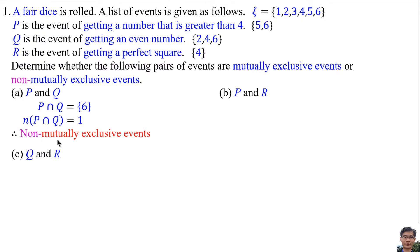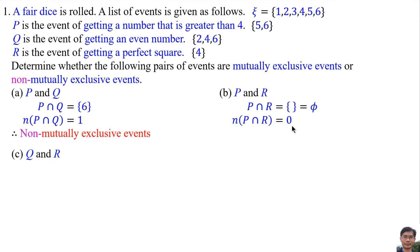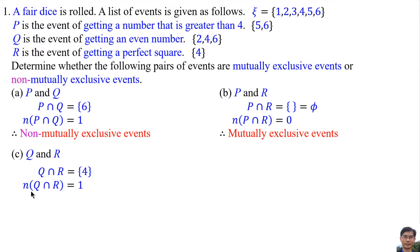Therefore, P and Q are non-mutually exclusive events. Part B: P and R. P intersection R has no common elements, so P intersection R is an empty set and the number of elements is 0, meaning they are mutually exclusive events. Part C: Q and R. Q intersection R contains the element 4, so the number of elements is 1, meaning Q and R are non-mutually exclusive events.